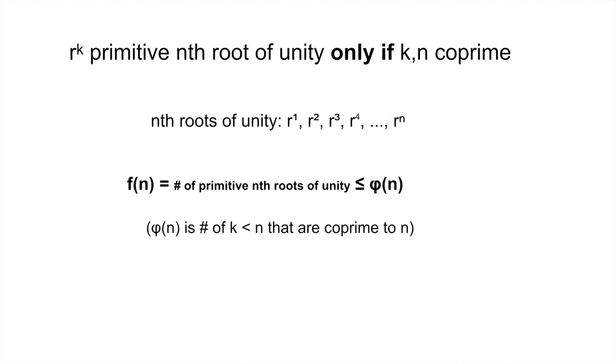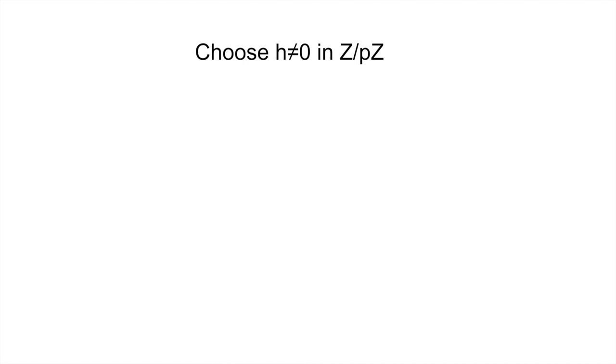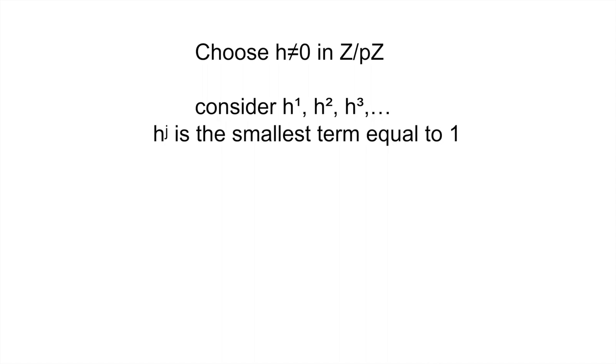Now choose any non-zero h in Z over pZ. Consider the sequence h, h squared, h cubed, etc. Eventually, there must be some term equal to 1. Let h to the j be the smallest such term. So, h is a primitive jth root of unity, and therefore, it contributes to f of j.